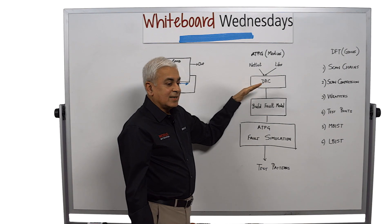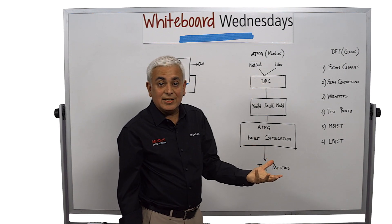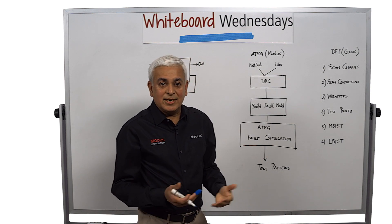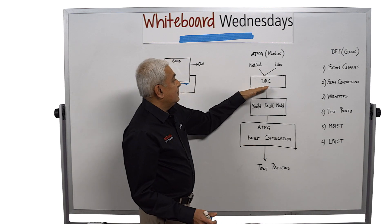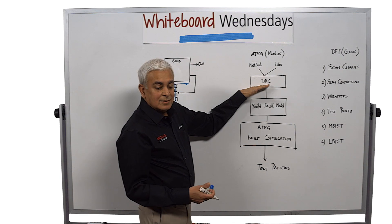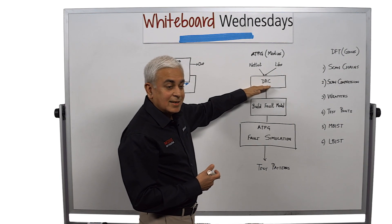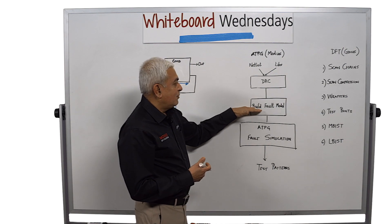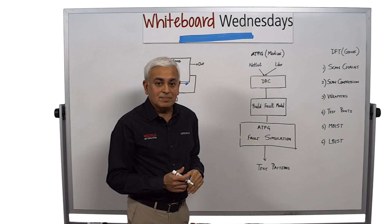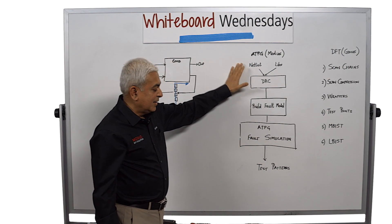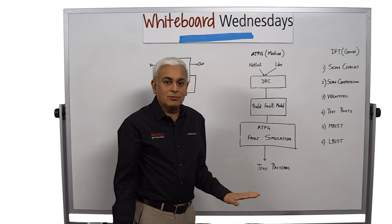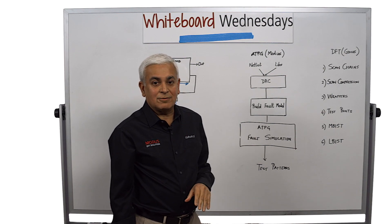Design rule checking checks whether the scan chains are correct and follow certain rules. For example, if there are multiple scan chains, do they shift in parallel. After we verify the DRC and confirm the shift registers are all correctly connected, we then move into building a fault model and automatic test pattern generation and fault simulation. The output of an ATPG system is test patterns, and in ATPG what we want is to create as few test patterns as possible for the highest fault coverage.